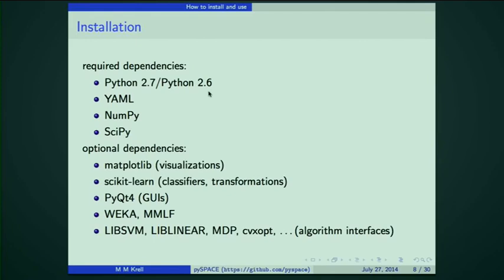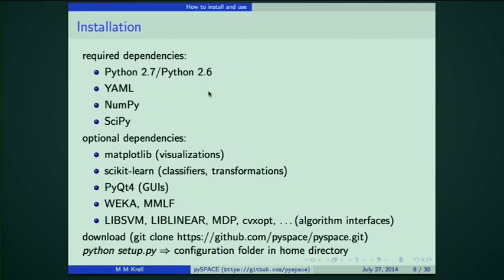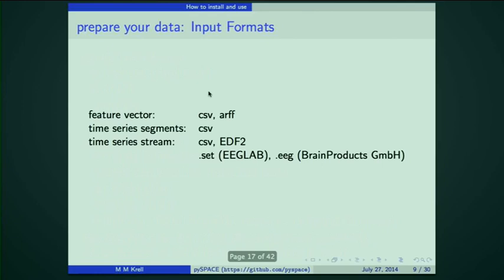There are optional dependencies depending on which algorithms you want to use: Matplotlib for visualizations, scikit-learn for extended classifiers and transformations, PyQt for GUIs, Weka, Maya Machine Learning Framework, LibSVM, LibLinear, a modular tool for data processing, CVXopt for special classifiers, and more. To install, you just download it, install the required dependencies, and run a little script which configures it on your PC so you can start the software immediately.